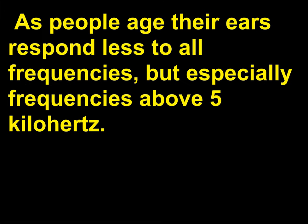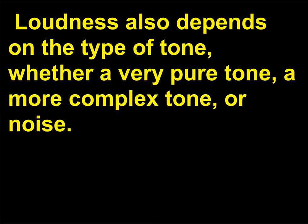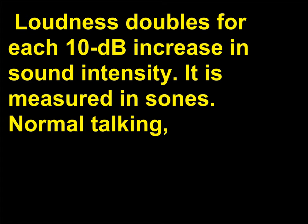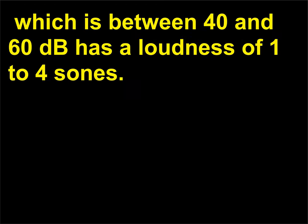As people age their ears respond less to all frequencies, but especially frequencies above 5 kilohertz. Loudness also depends on the type of tone, whether a very pure tone, a more complex tone, or noise. Loudness doubles for each 10 dB increase in sound intensity and is measured in sones. Normal talking, which is between 40 and 60 dB, has a loudness of 1 to 4 sones. Hearing damage from sustained sound at 90 dB corresponds to 32 sones.